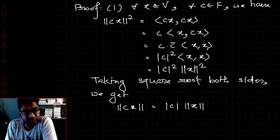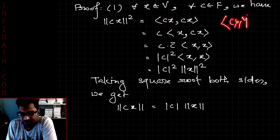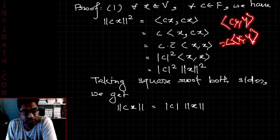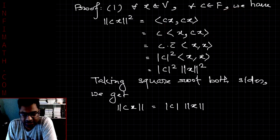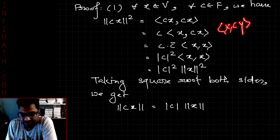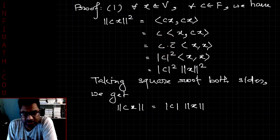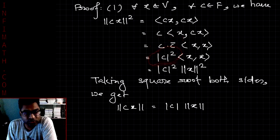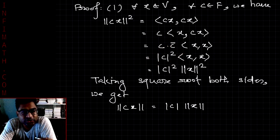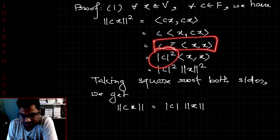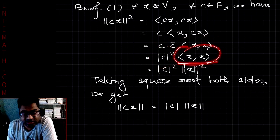So the square of the norm of cx equals ⟨cx, cx⟩. We know that ⟨cx, y⟩ = c·⟨x, y⟩, so c comes out and we get c·⟨x, cx⟩. Also, ⟨x, cy⟩ = c̄·⟨x, y⟩, so we get c·c̄·⟨x, x⟩. Since F is a general complex field, c·c̄ equals the modulus of c squared.